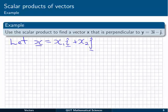First of all, assuming we're in two dimensions, let's let our unknown vector x be x1i plus x2j. Then if we want it to be perpendicular to y equals 3i minus j, then we need x dotted with y equal to 0. That's what we need for these two things to be perpendicular.